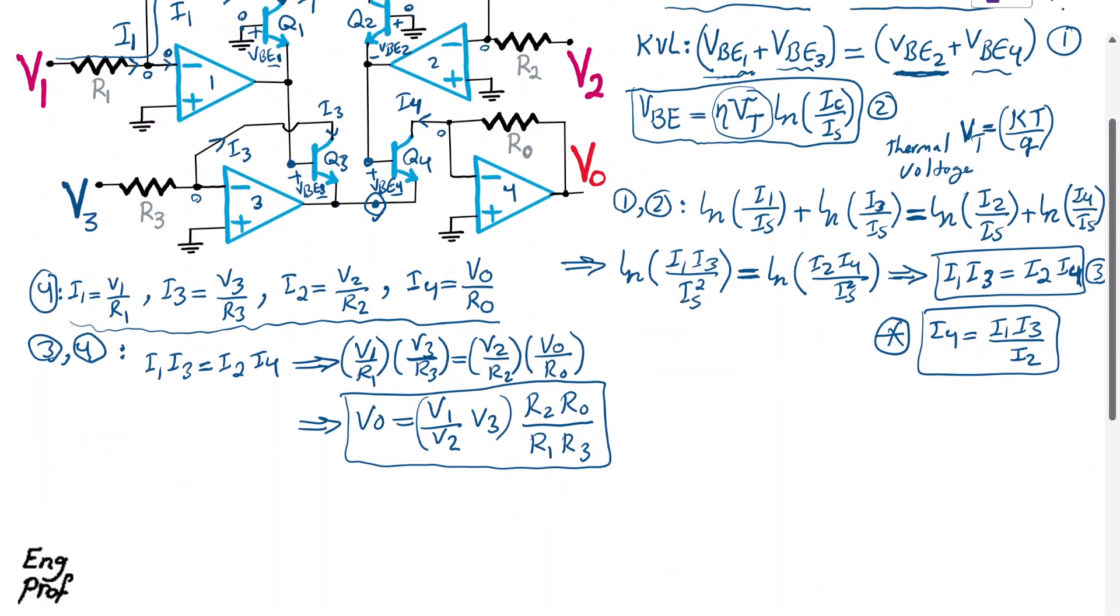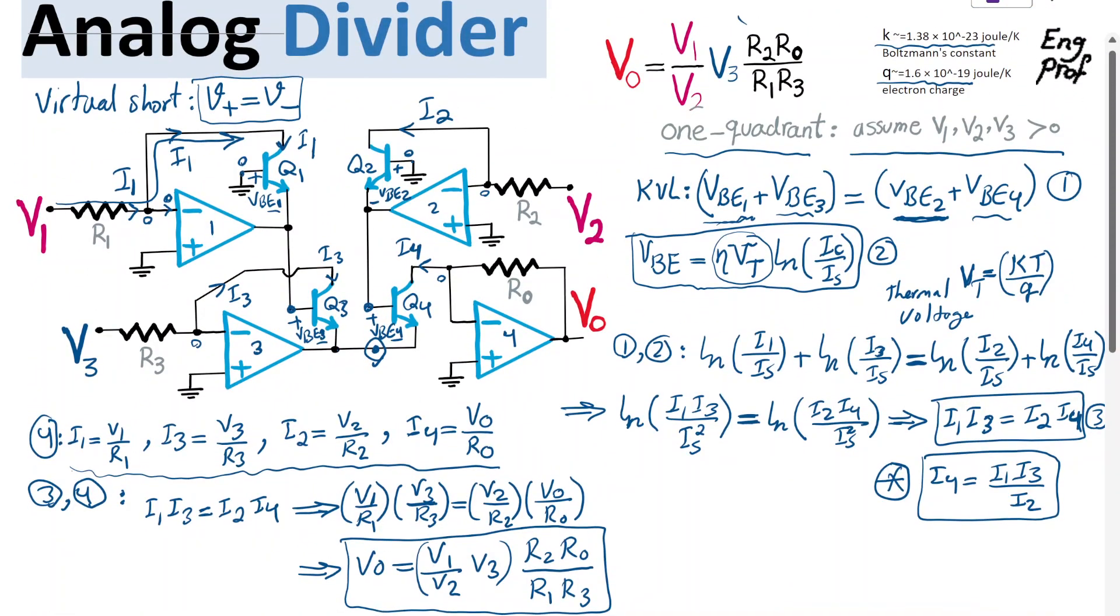So I hope that this example that shows how at least in the first attempt we can realize one quadrant analog divider and even analog multiplier both in the sense of voltage implementation version of it or even current implementation version